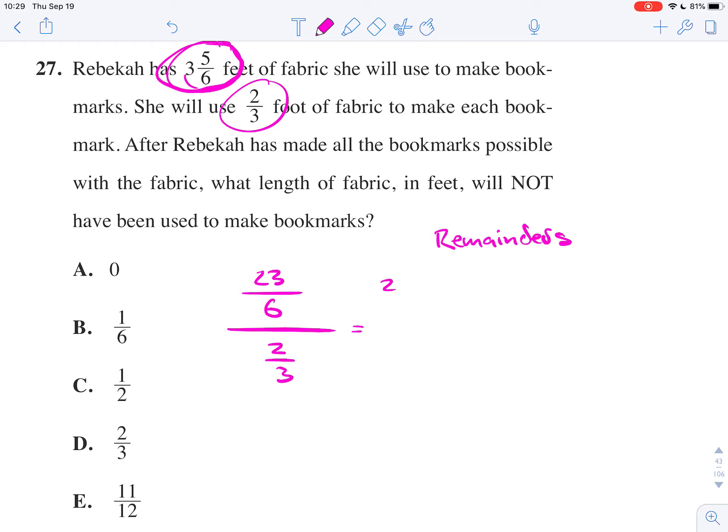Remember that division by a fraction is multiplication by its reciprocal. There is a little bit of reduction that can go on here. So, 3 divided by 6, that's a half. So, 1 over 2. And that will be 23 times 1 is 23, over 2 times 2, which is 4.